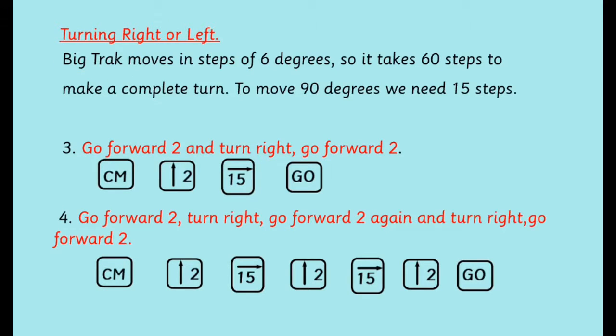Turning right or turning left - Big Track moves in steps of six degrees, so it takes 60 steps to make a complete turn. So to move 90 degrees, we need 15 steps. So here's some examples. The first one is go forward two, turn right, and go forward two more. So we've got CM, of course, forward two steps, turn right 15 steps, and go.